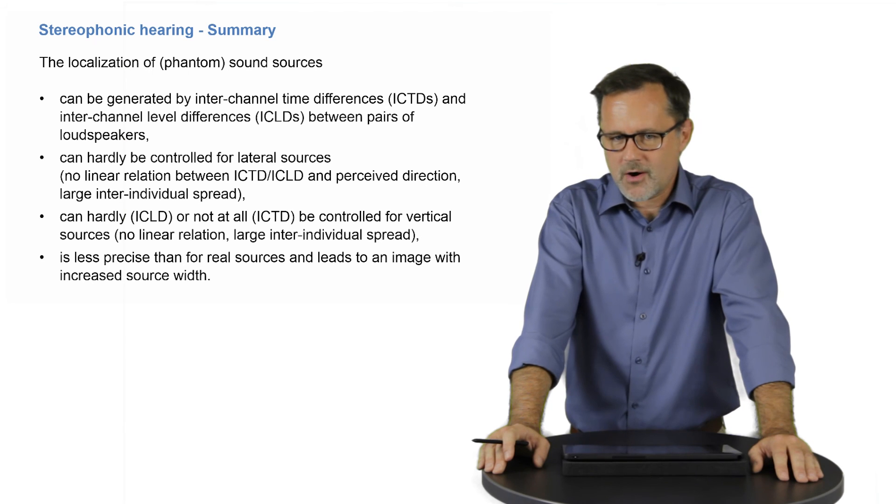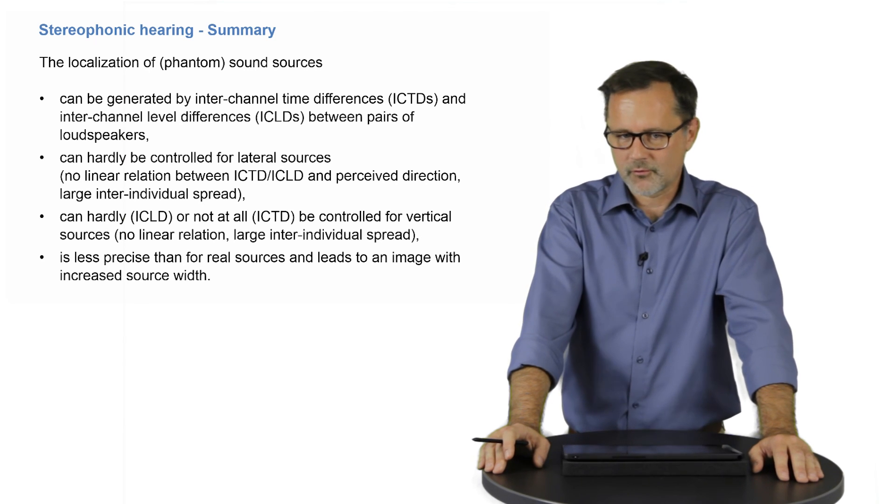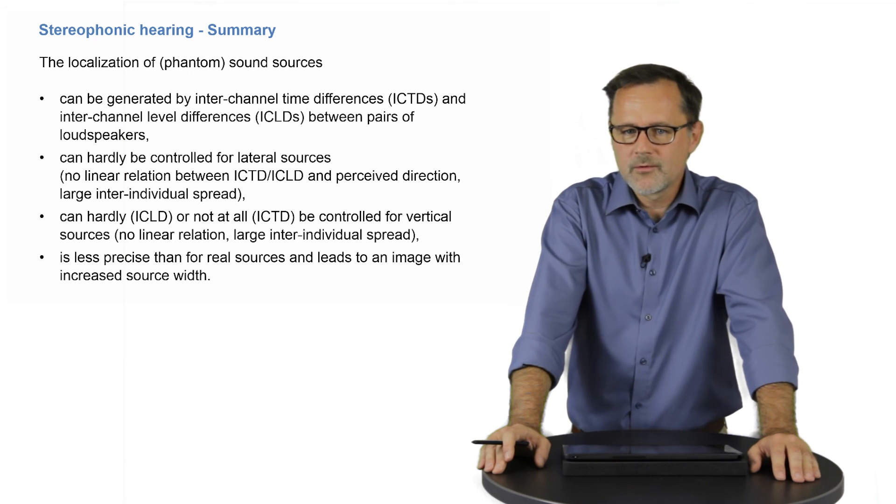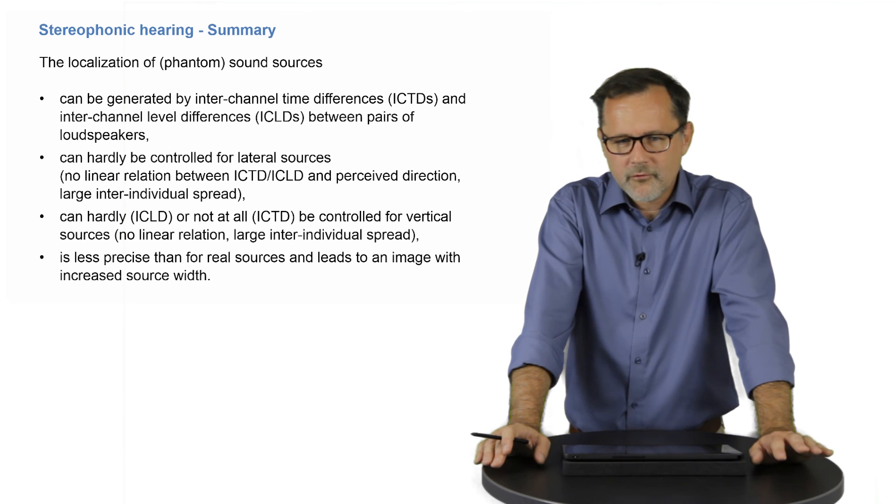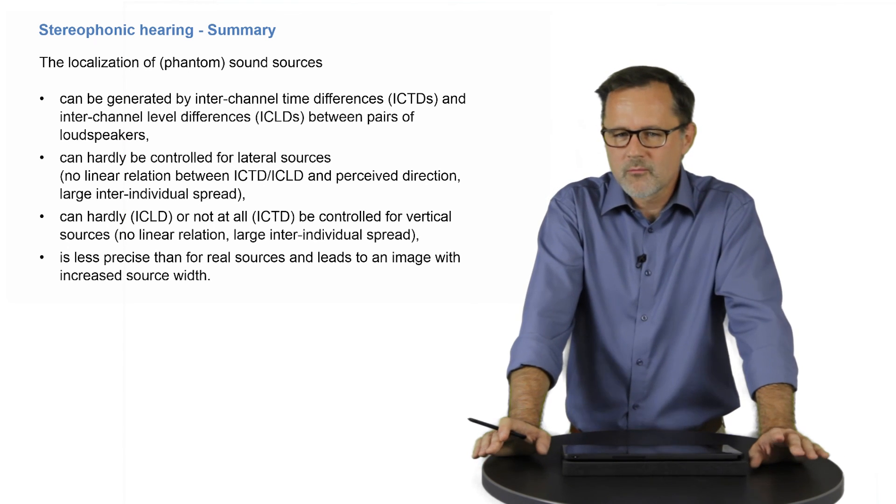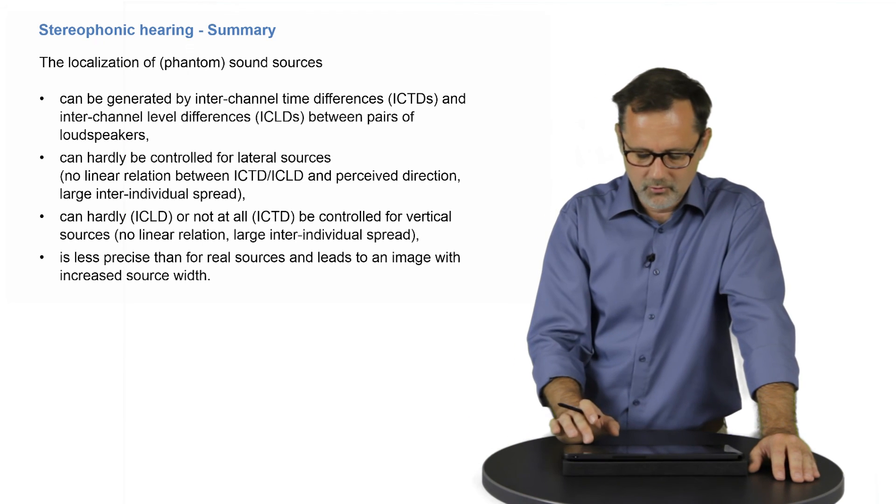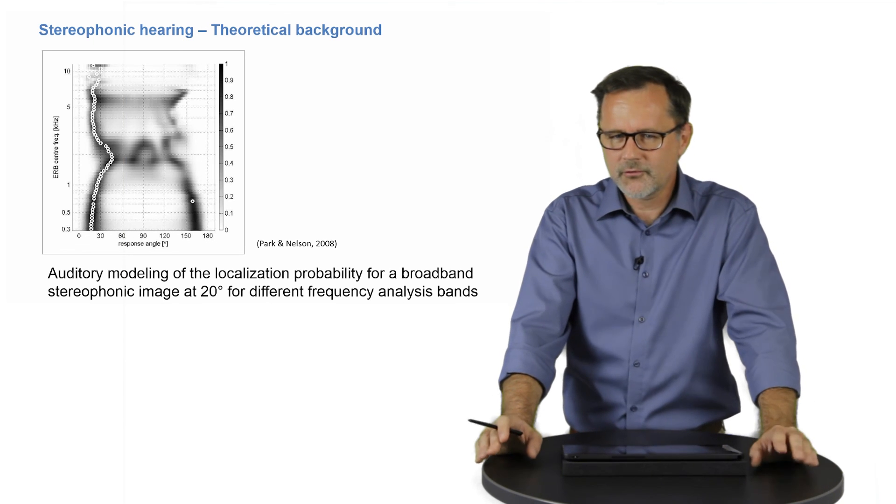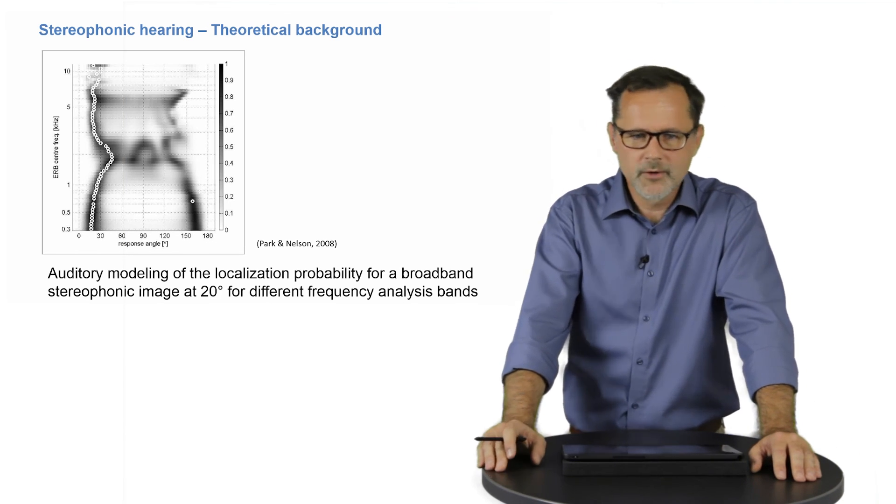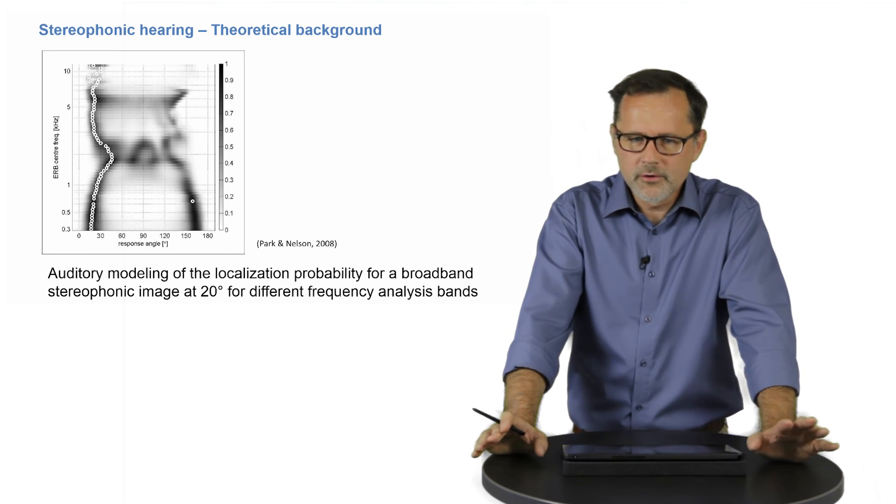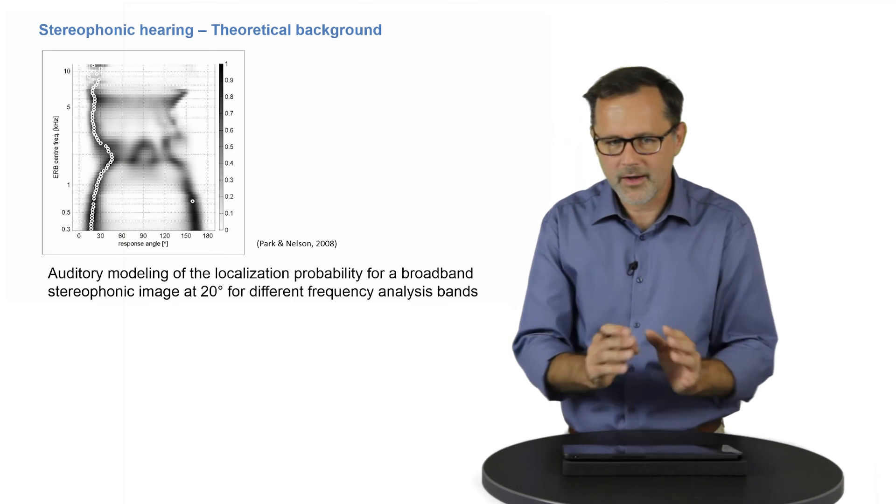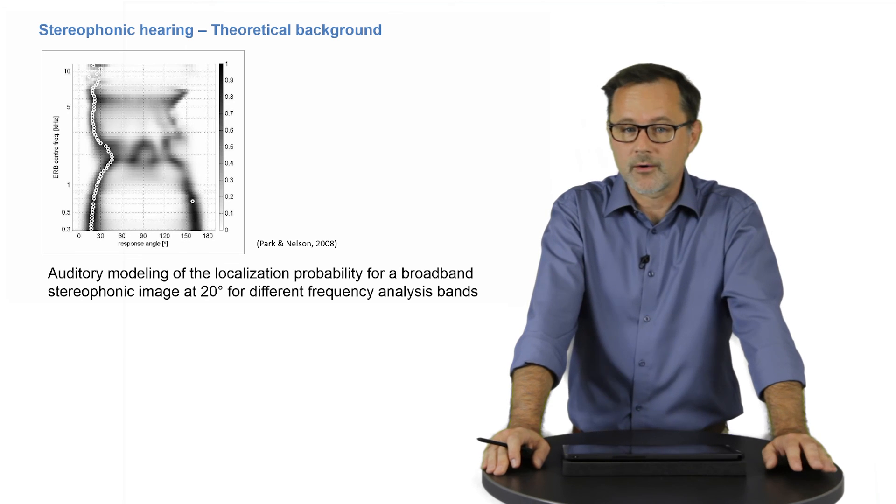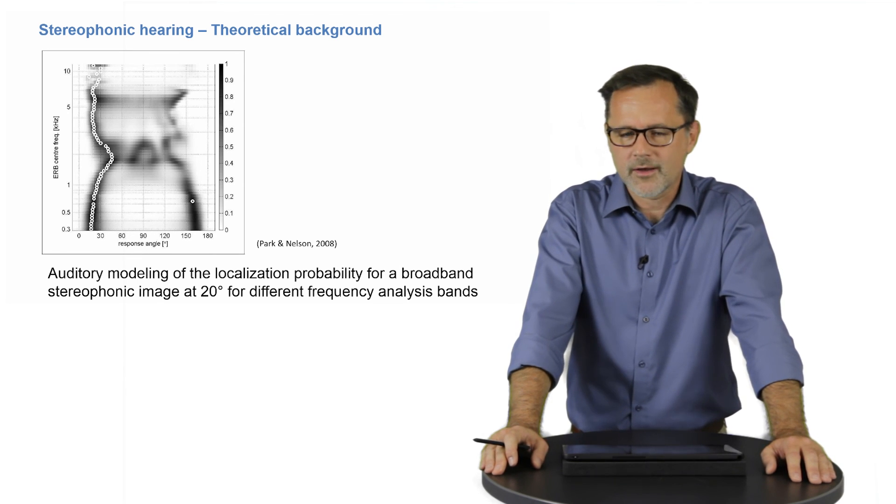What we have not answered so far is the question why we hear phantom sources at all, and why we localize them at a more or less defined position. Well, for an answer to this question, we have to consider our model of the auditory processing a little closer. This model includes a peripheral stage, where sound goes through the outer, the middle and the inner ear. It includes a binaural stage, where the two signals are brought together and compared, and it includes a central process where decisions are made, for example, where I decide to localize a sound.